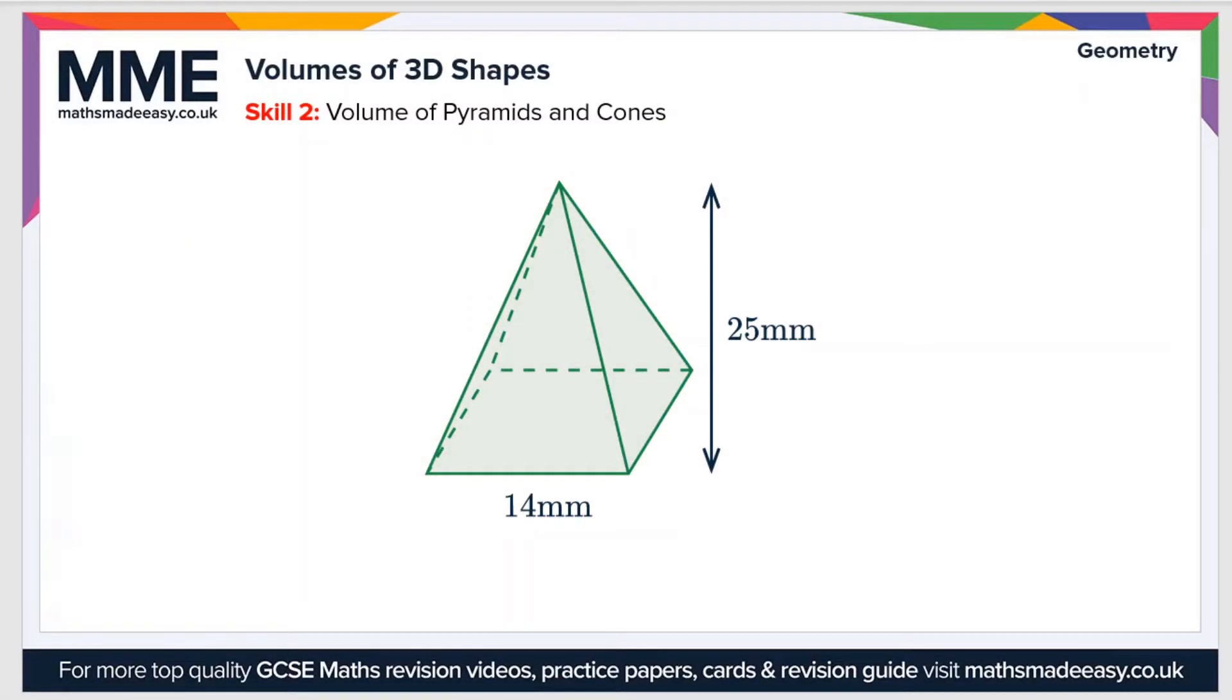So the second skill that we'll look at is calculating the volume of pyramids and cones. Now the reason that these are grouped together is because a cone is essentially just a circle-based pyramid, so the formula that you'll use is the same for both. The formula we need is volume equals 1/3 times A, where A is the area of the base of the pyramid or cone, and then we times that by the vertical height.